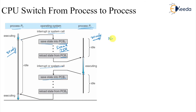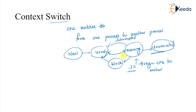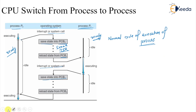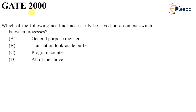This is the normal cycle of process execution, repeating not just with P0 and P1 but with many other processes. Interrupts keep occurring and context switches keep happening. The reasons a context switch can occur are: termination, I/O wait, or an interrupt.